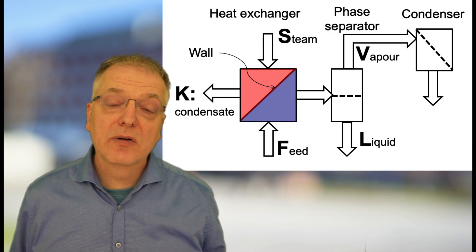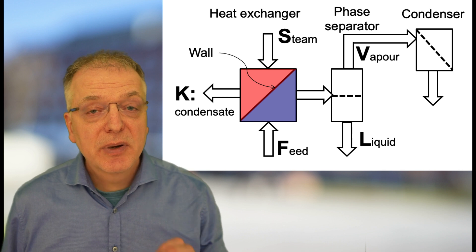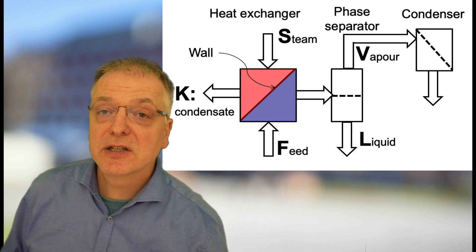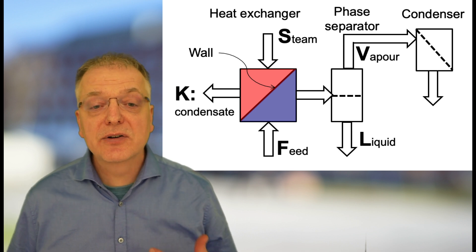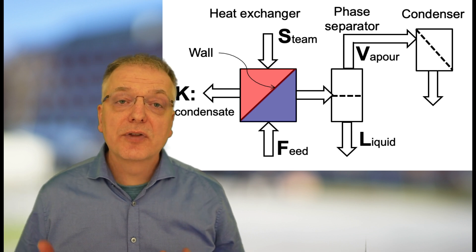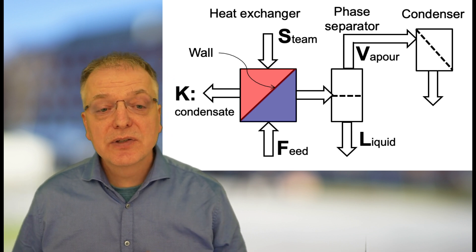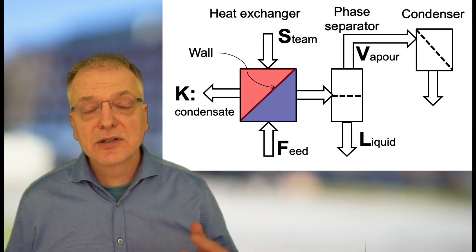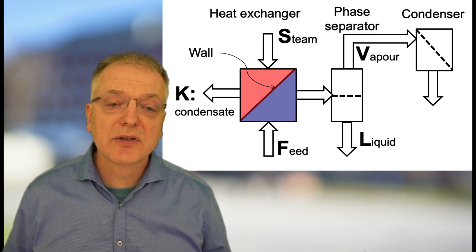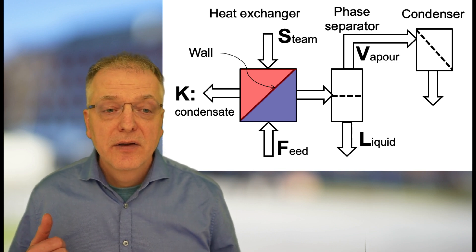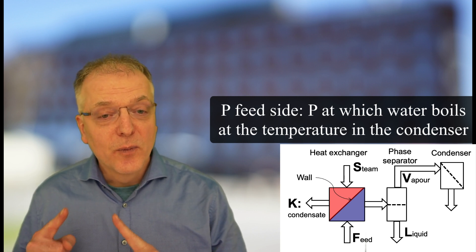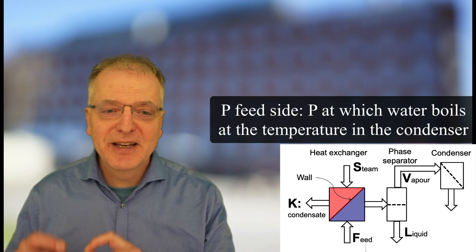We will not be focusing on flash evaporation in this course, but rather designs where the feed is gradually heated and the fraction of vapor gradually increases along the feed side of the heat exchanger. We will assume that the pressure is the same along the equipment, that is through the heat exchanger and the phase separator, all the way to the condenser. This pressure on the feed side is the pressure at which water boils at the temperature in the condenser.